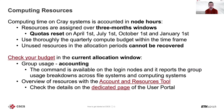Regarding computing resources: computing time on Cray systems like Piz Daint is accounted in node hours. Resources are assigned on a three-month window, with quotas reset on April 1st, July 1st, October 1st, and January 1st. You should use your quarterly compute budget thoroughly within the three-month time frame, because unused resources in an allocation period cannot be recovered. This ensures on-time use of the resources across the allocation year.